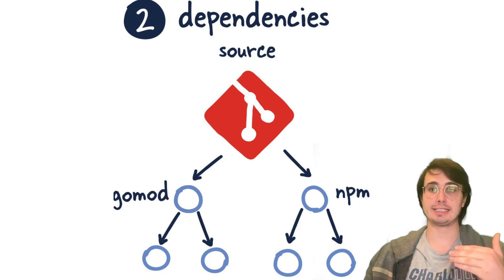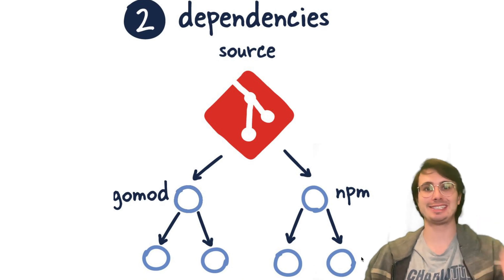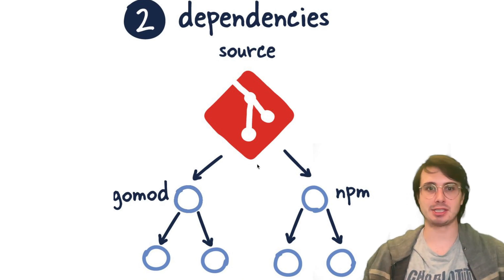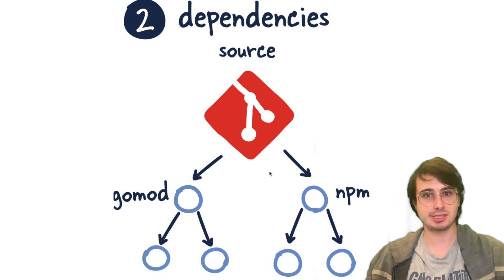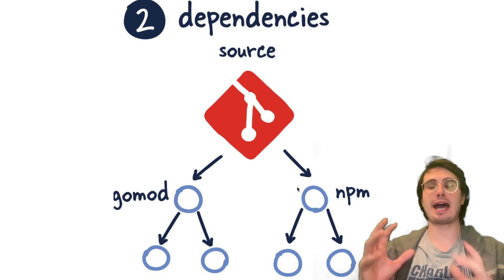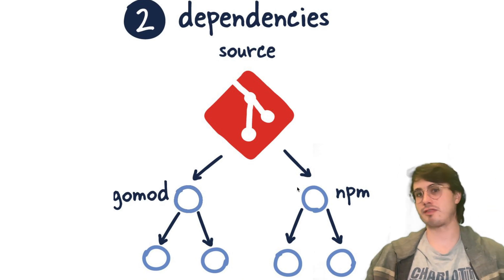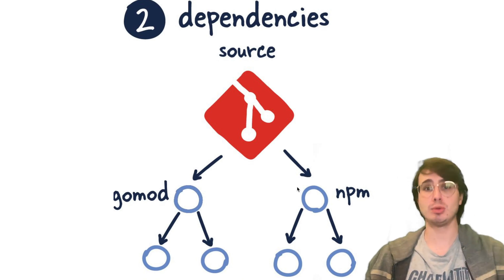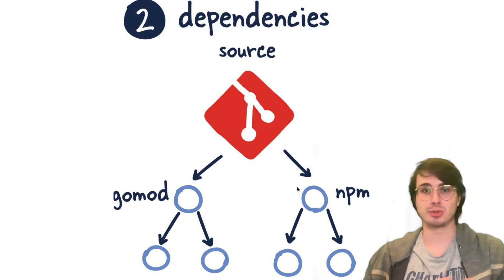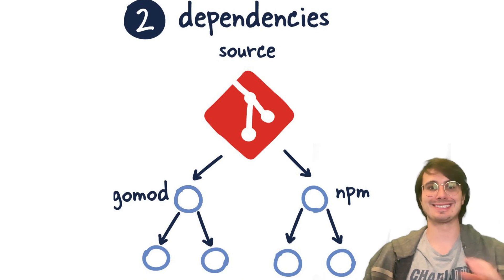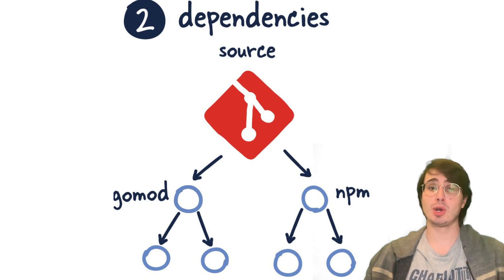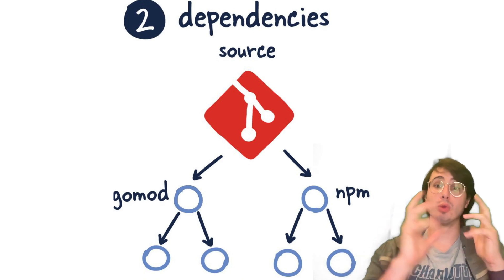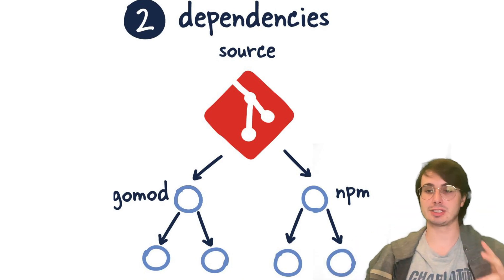The next thing to think about are dependencies. In a 12-factor application, dependencies need to be explicitly declared and isolated. Instead of relying on system-level packages or implicit dependencies, you use dependency declaration manifests like a package.json file for Node.js, or a requirements.txt for Python, where all dependencies are listed in a single file. You can also use dependency isolation tools like virtual environments or containers to ensure no implicit dependencies leak in from any surrounding system — so nothing installed on your local computer accidentally carries over into the deployed application.